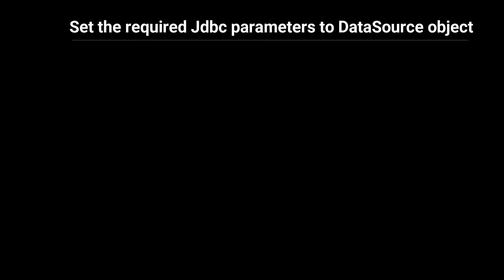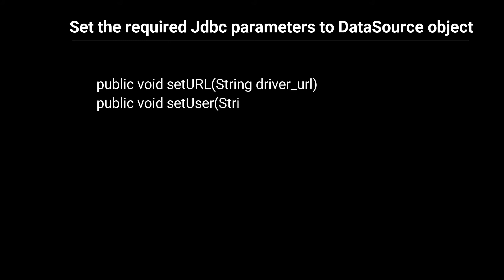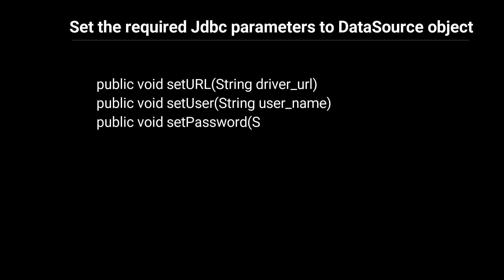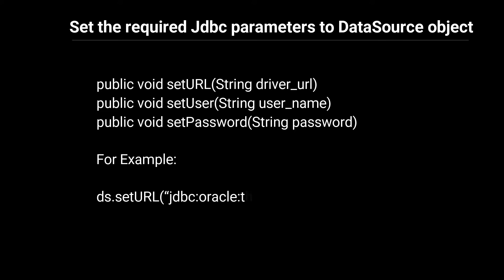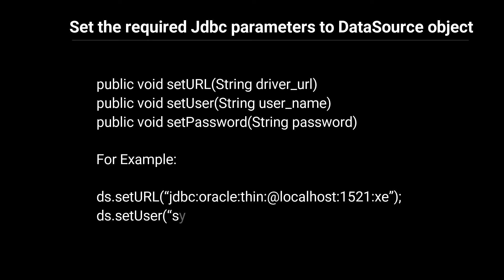Step 2: Set the required JDBC parameters to the DataSource object. To set parameters like driver URL, database username, and password we use the following methods: public void setUrl(String driverUrl), public void setUser(String username), and public void setPassword(String password). For example: ds.setUrl("jdbc:oracle:thin:@localhost:1521:xe"); ds.setUser("system"); ds.setPassword("system");